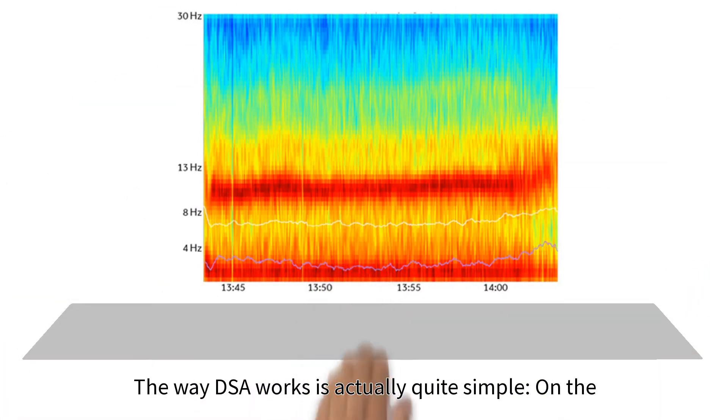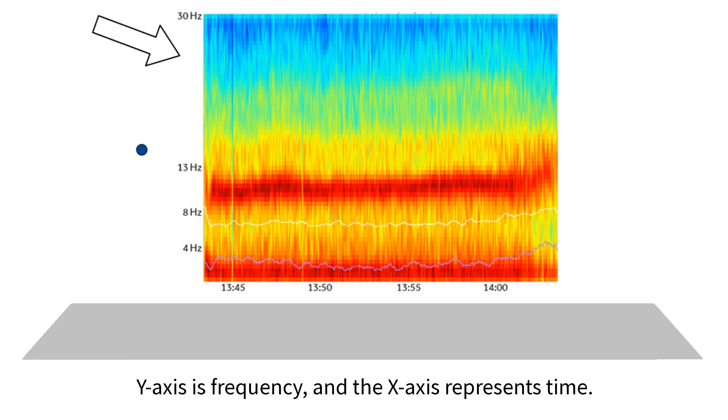The way DSA works is actually quite simple. On the Y-axis is frequency, and the X-axis represents time.